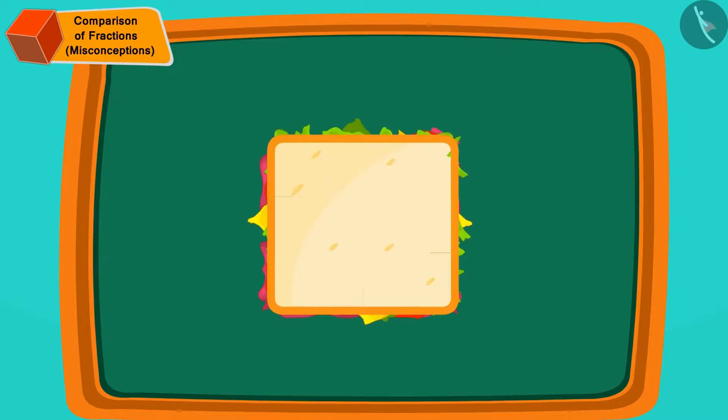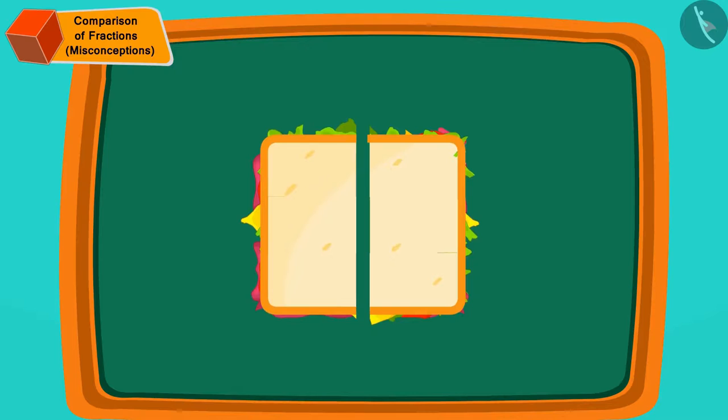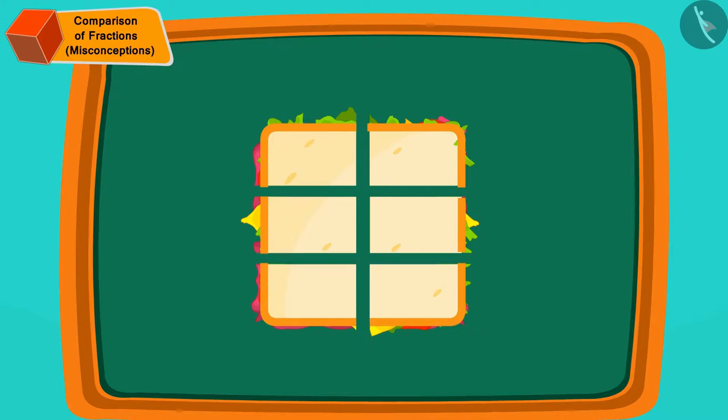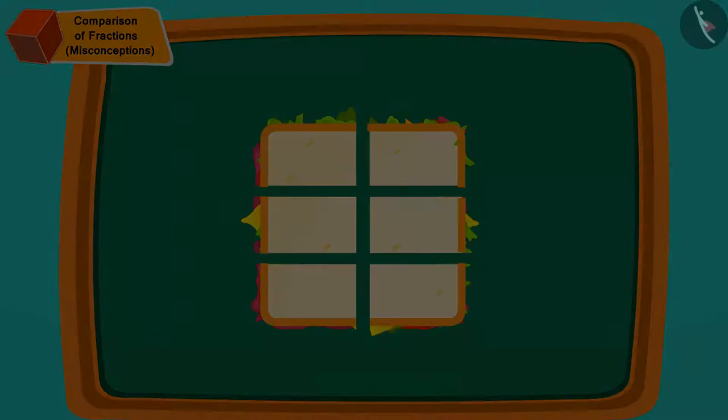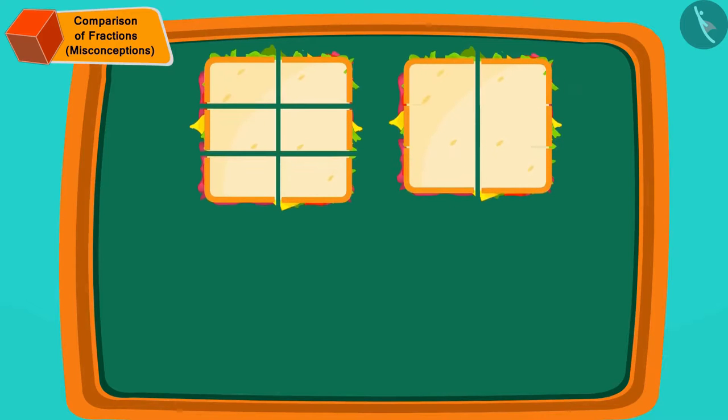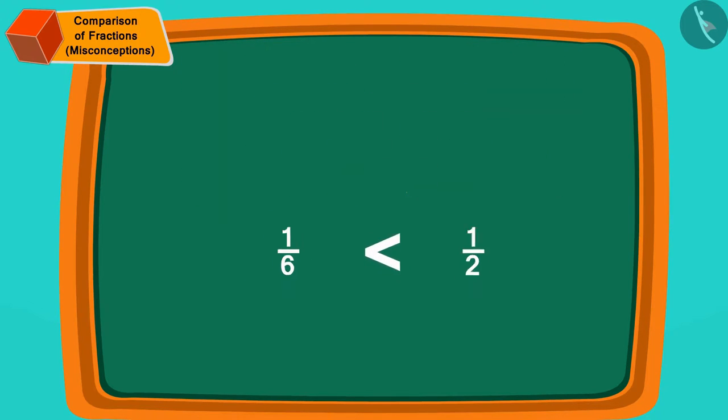Children, if we divide any object into equal parts, as we increase the total number of parts, they become smaller and smaller. Similarly, in one-sixth, we have made a total of six pieces of the sandwich. Whereas, in one-by-two parts, we have made only two parts. Therefore, a piece of one-by-two part is larger than a piece of one-sixth part.